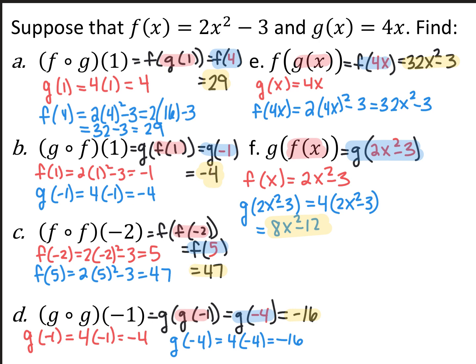f composed with f of negative 2 is the same thing as f of f of negative 2. You do f of negative 2 and get 5. Then you take 5 and plug that into f again, and you end up with 47.